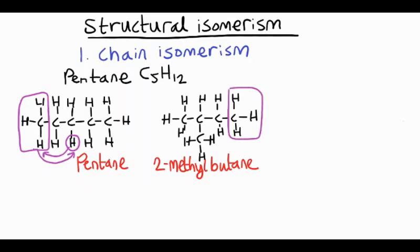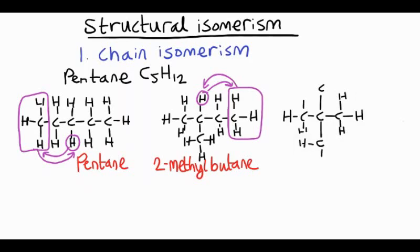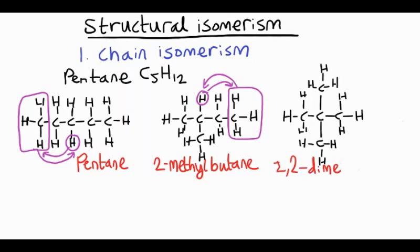If we took another carbon off the end and swapped it with that hydrogen, we could make a new molecule which would have three carbons in the chain, and you'd actually have methyl groups coming off the middle carbon. You've got your two methyl groups there, and that new molecule would be called 2,2-dimethylpropane, because this time you've got three carbons in the longest chain.